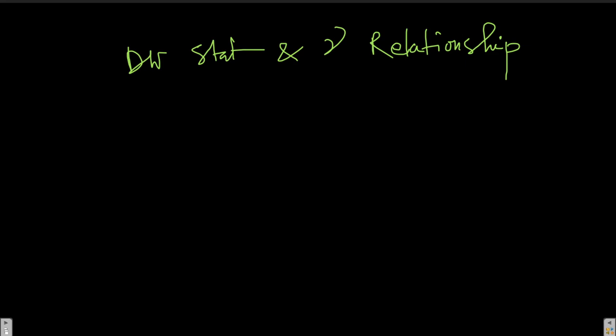Hello and welcome back to the lecture on Applied Econometrics. We have been talking about autocorrelation and in that context we explained the Durbin-Watson statistic and how it helps us identify positive and negative autocorrelation.